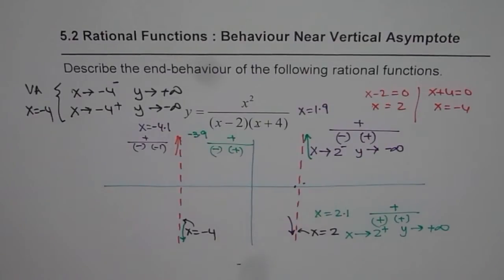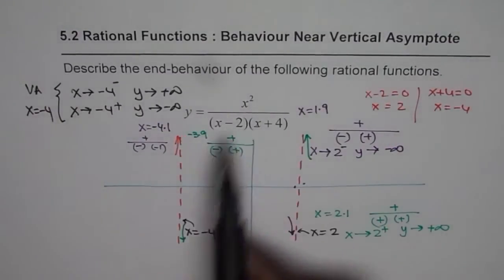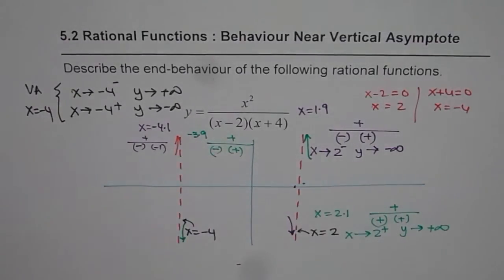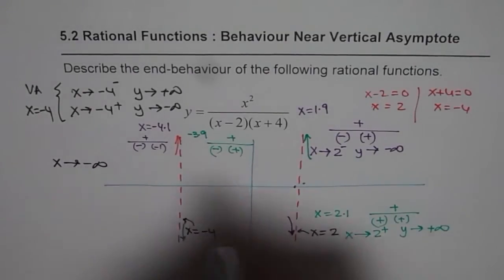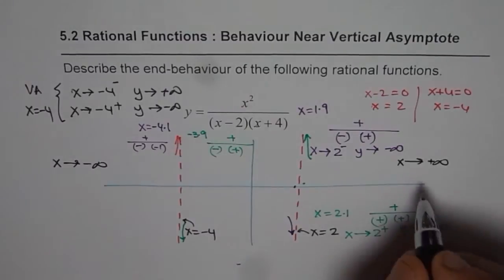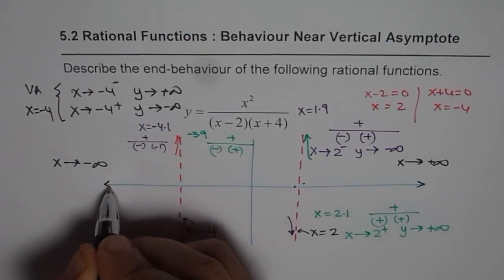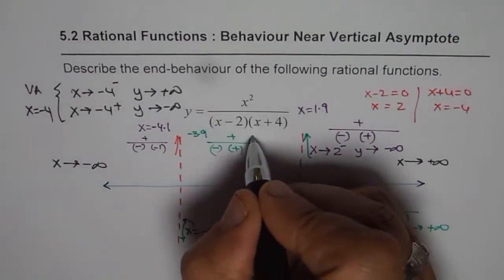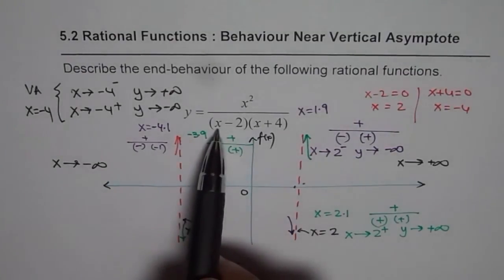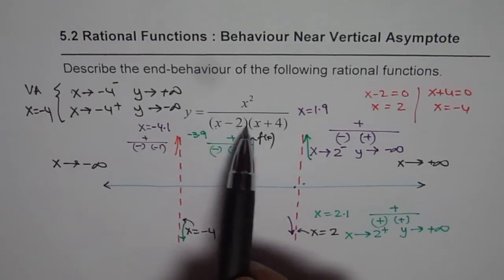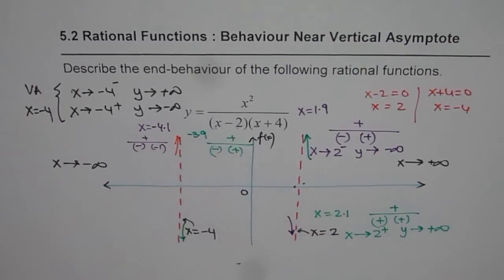Now let's consider the second part — the end behavior of this function. End behavior means what happens when x approaches negative infinity or when x approaches positive infinity. Those are the two ends. Let's substitute a very large negative number, say x equals minus 100, into the function and see what we get.